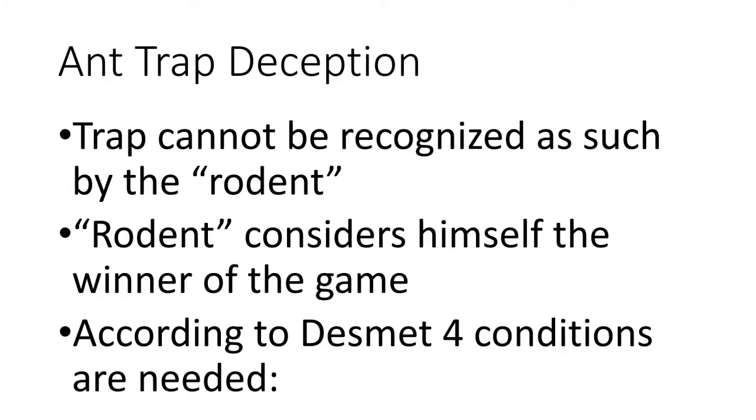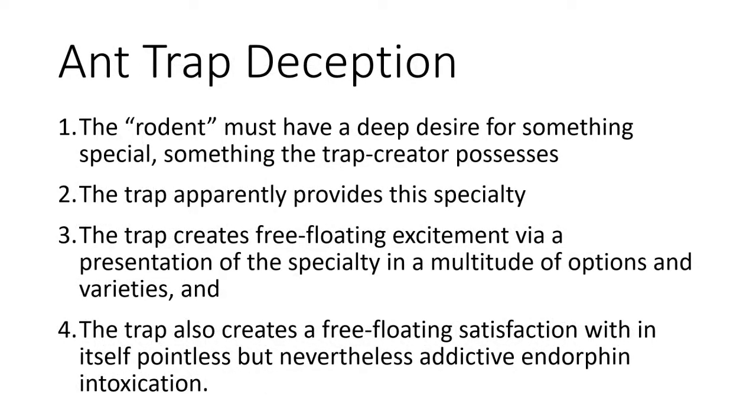In difference to ordinary trap strategies, where the trapped individual sooner or later realizes its predicament, the perfect trap does not reveal its existence to the victim. Such a process requires four conditions. The victim must have a deep desire for something special, something the trap creator possesses or even only pretends to possess. The trap apparently provides this speciality. The trap creates free-floating excitement via a presentation of the speciality in a multitude of options and varieties. And finally, the trap also creates a free-floating satisfaction with in itself pointless, but nevertheless addictive, endorphin intoxications.